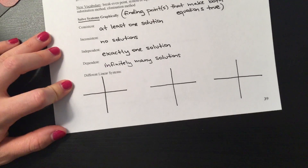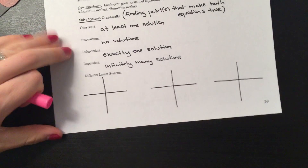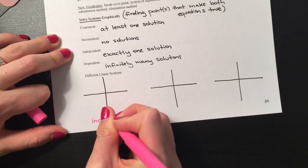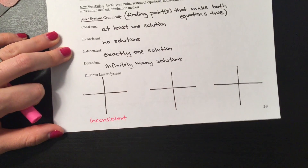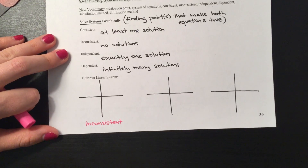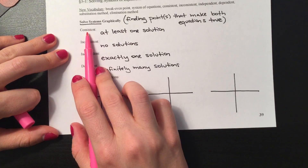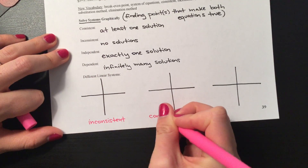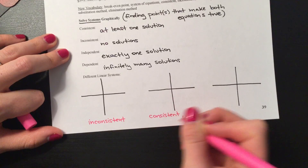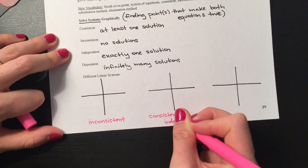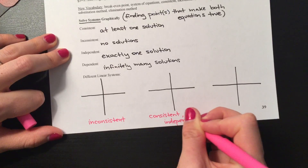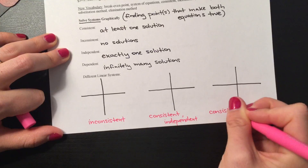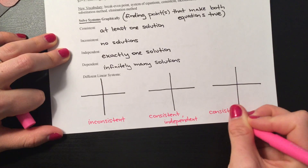If it's inconsistent, it's just inconsistent — there's no further description. So that's one possibility. Our system of equations could be inconsistent. And then if it's consistent, it can be one or the other: a solution can be consistent and independent, or a system can be consistent and dependent.